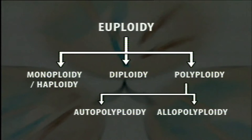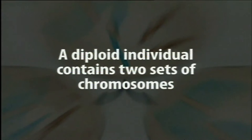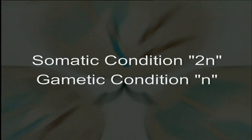Euploidy is of the following different types: monoploidy or haploidy, diploidy, and polyploidy. Diploidy is a general or normal condition among plants and animals because most plants and animals are diploid. Diploidy means an individual having two sets of chromosomes — one set contributed by each parent during sexual reproduction. An individual with a diploid condition has a 2x constitution, meaning two sets of chromosomes designated as 2x. The somatic chromosome number is designated by 2n, whereas the gametic chromosome number is n.